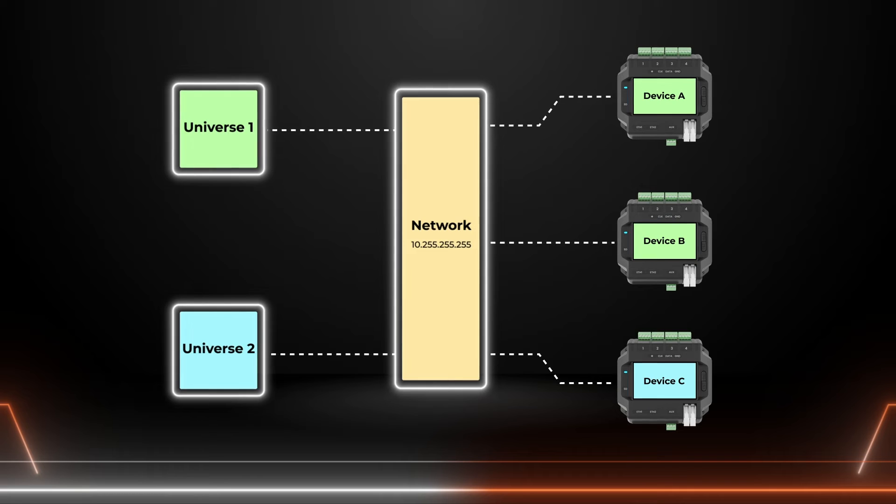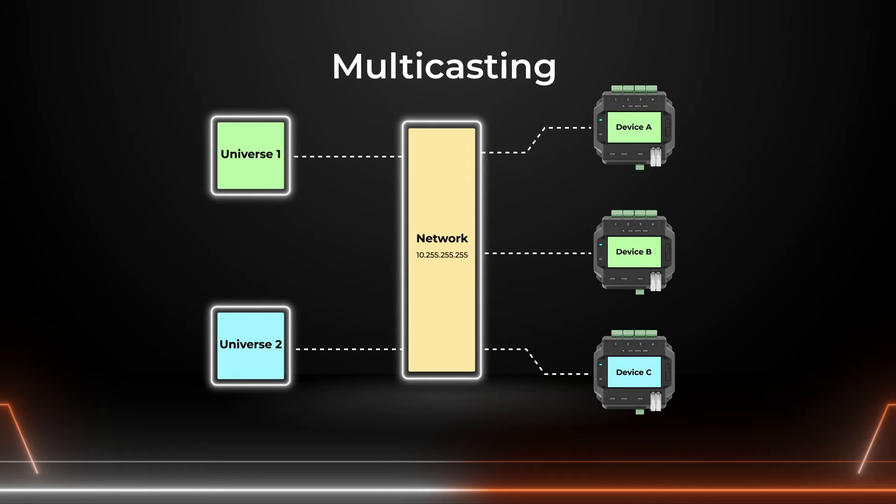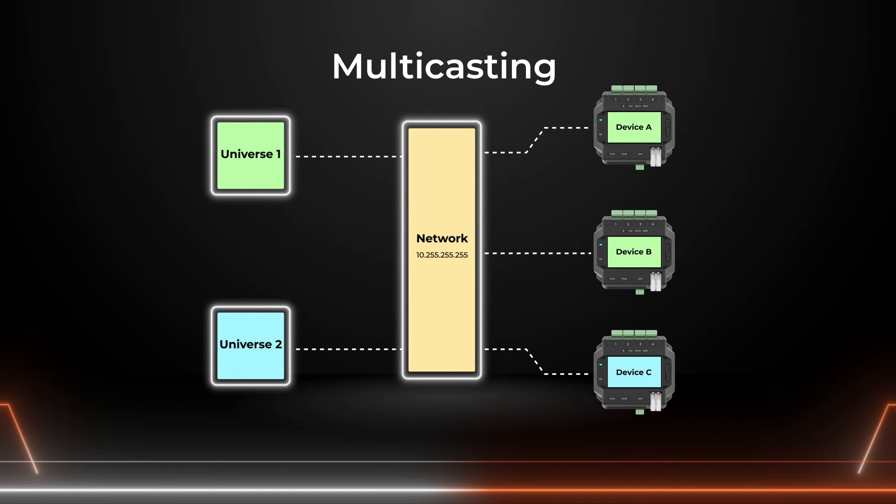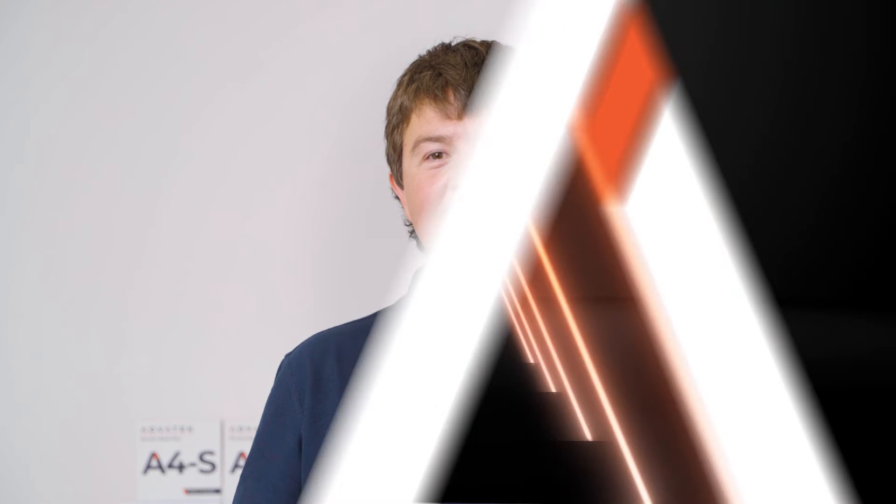This method of delivering EDMX universes is referred to as multicasting, which is one-to-many. For multicast delivery to work efficiently, a feature on the network switch called IGMP snooping must be available with suitable capacity and correct configuration. We have covered IGMP snooping as a separate video.